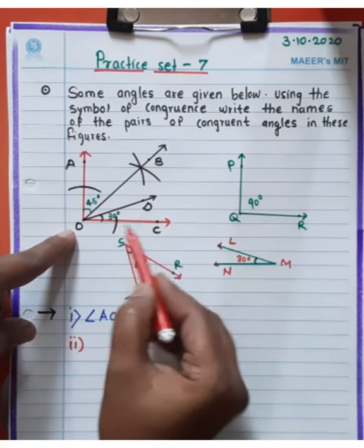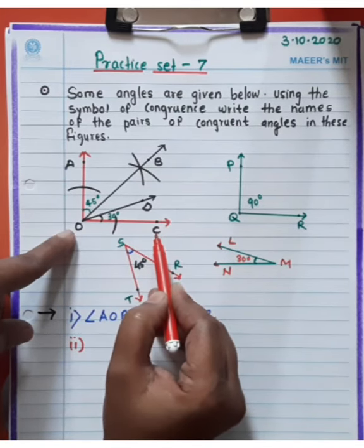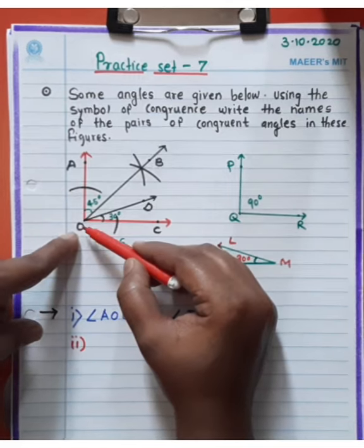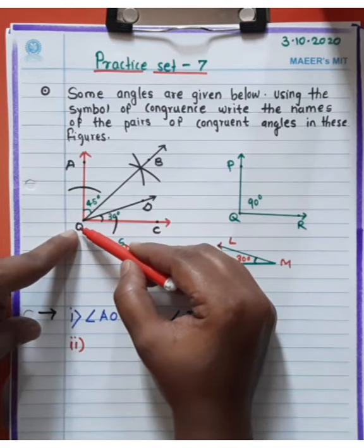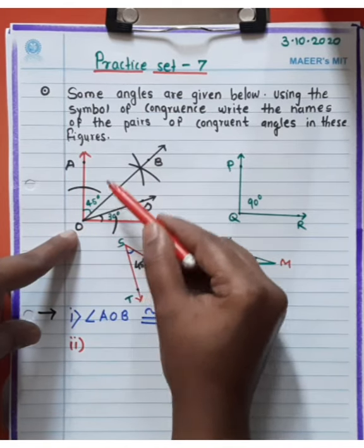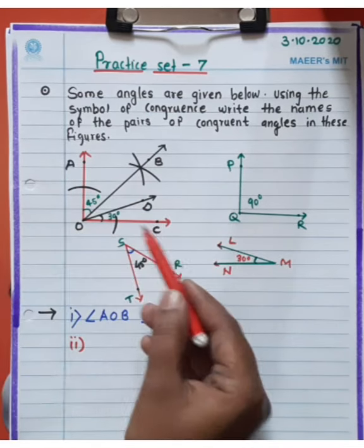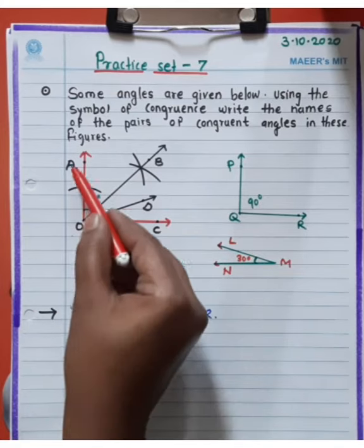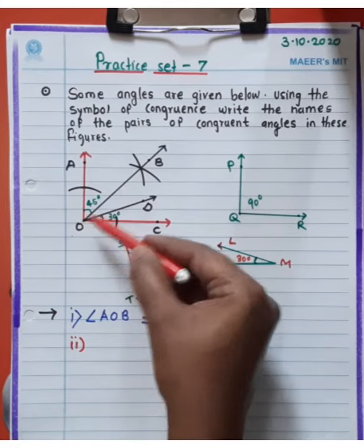Angle BOC is also 45 degrees because segment OB is the bisector of angle AOC. OB bisects AOC into two equal parts — each is 45 degrees.